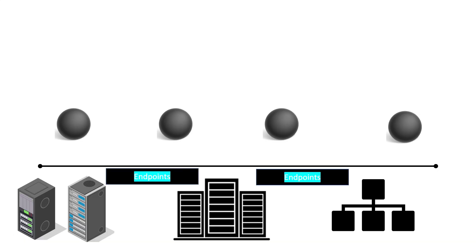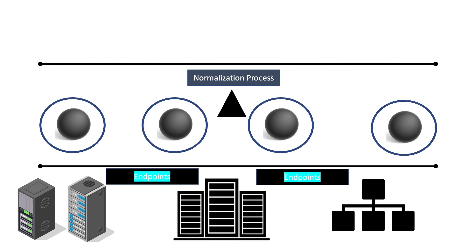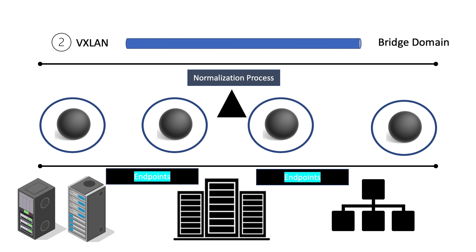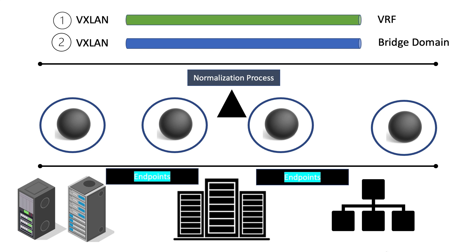All traffic in the ACI fabric is normalized as VXLAN packets. ACI encapsulates external VLAN, VXLAN, and NVGRE packets into VXLAN packets at ingress. This normalization of traffic neutralizes traffic types, and now we can have bridge domains and VRFs. A bridge domain is a Layer 2 forwarding construct within the fabric that defines the flooding domain. You might think this is just like a VLAN, and you'd be right — except bridge domains are not subject to many of the same limitations as the VLAN construct.